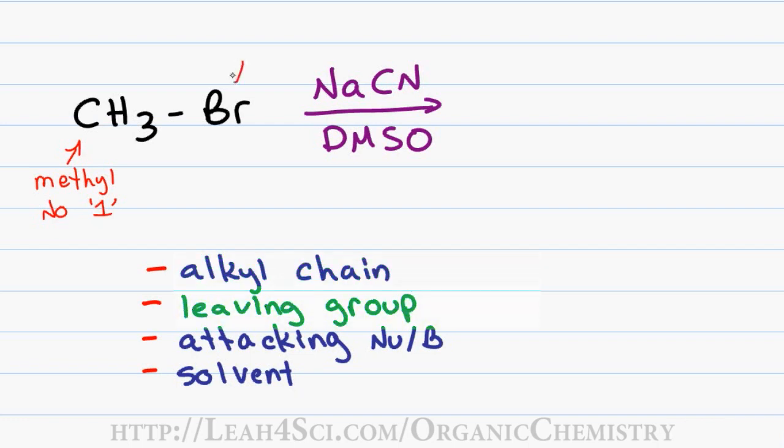For the leaving group, we have a bromine. Bromine is a halogen and is therefore a good leaving group in the sense that when it breaks away and forms a negative charge in solution, the negative is distributed over this large atom making it relatively stable.